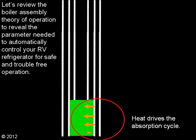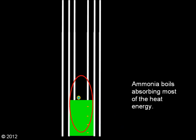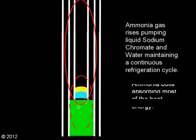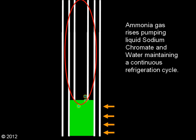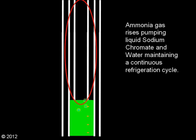Let's review the boiler assembly theory of operation to reveal the parameter needed to automatically control your RV refrigerator for safe and trouble-free operation. As we learned in the last video, heat drives the absorption cycle. Ammonia boils, absorbing most of the heat. Ammonia gas rises, pumping liquid sodium chromate and water, maintaining a continuous refrigeration cycle.